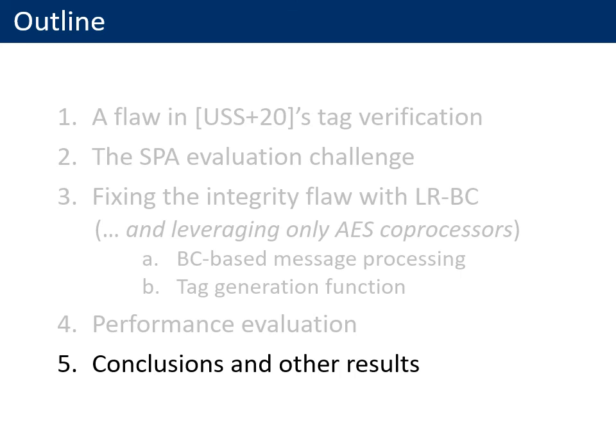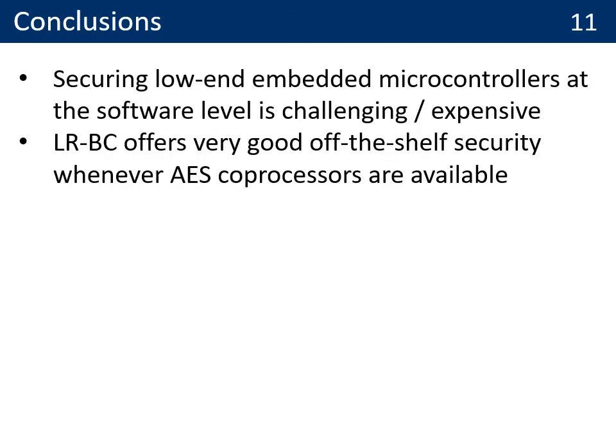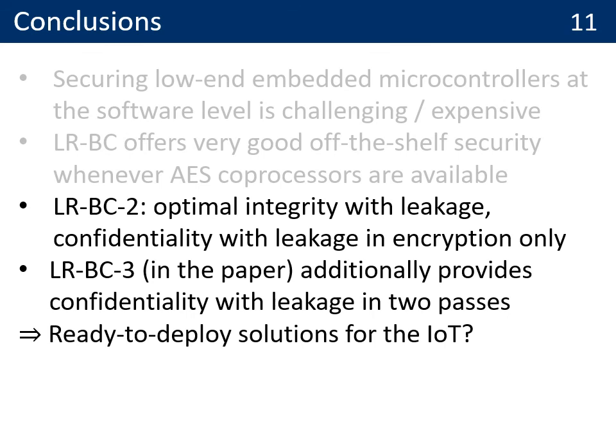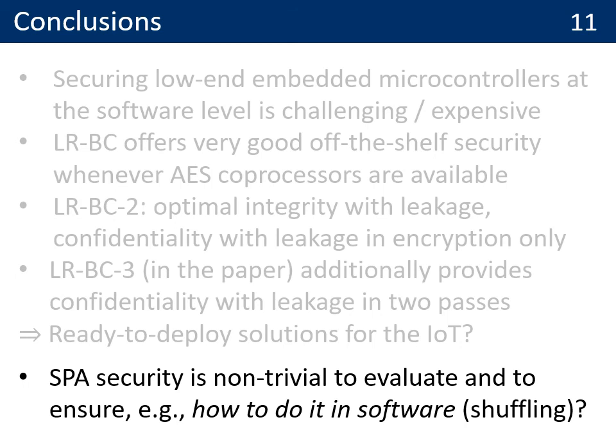This leads me to the conclusions. Our results recall that securing low-end embedded microcontrollers at the software level is challenging and likely to be very expensive. The LRBC mode of operation aims to offer good off-the-shelf security whenever AES coprocessors are available. LRBC2 provides optimal integrity with leakage and confidentiality with leakage in encryption only. LRBC3, described in the paper, additionally provides confidentiality with leakage in two passes. We hope these give ready-to-deploy solutions for the IoT. Finally, we note that SPA security is highly non-trivial to evaluate and to ensure, which leads to the open question of how to obtain SPA security in software, for example using the shuffling countermeasure. Thank you for your attention.